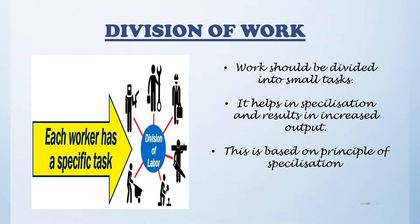This principle is based on specialization. If a particular employee is trained and made to do that work over a continuous period of time, they become specialized in it. For example, if one person is skilled in computer programming and continues to do that work over time, this continuity specializes them in that job and consequently improves their performance. The basic focus of division of work is efficient utilization of labor and specialization, which results in increased output.